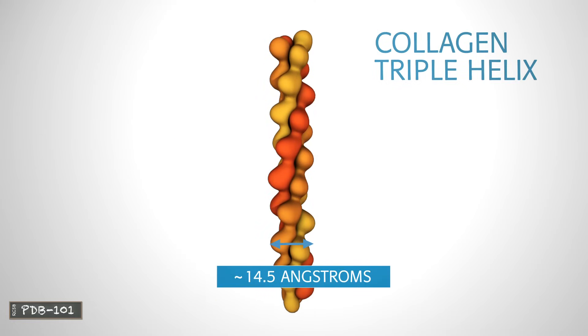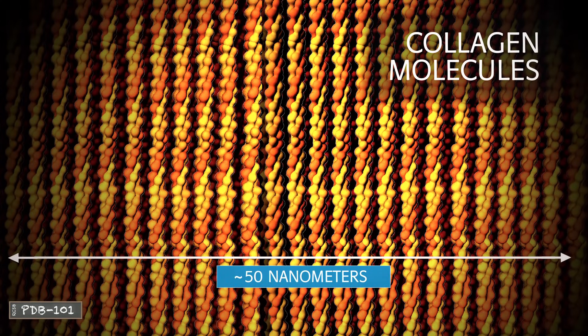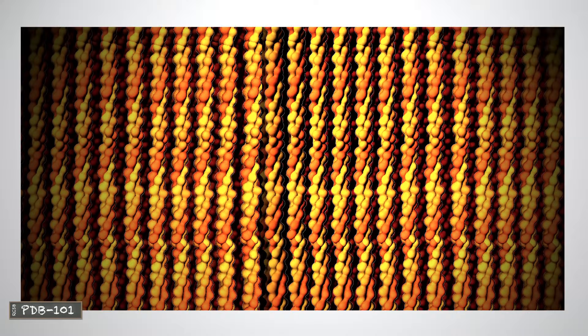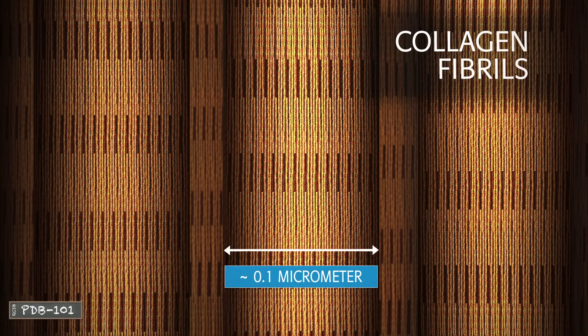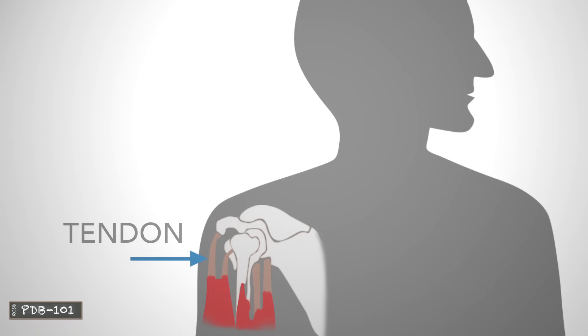Collagen forms a strong triple helix that is used throughout the body for structural support. Collagen molecules can form elongated fibrils, which aggregate to form collagen fibers. This type of collagen is abundant in skin and tendons.